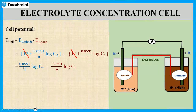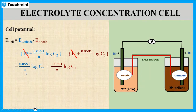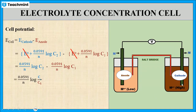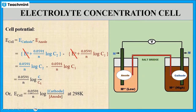The equation becomes: E cell = (0.0591 / N) × log C2 − (0.0591 / N) × log C1. Since 0.0591 / N is common, we take it outside: E cell = (0.0591 / N) × (log C2 − log C1). Since log X − log Y = log(X/Y), this becomes E cell = (0.0591 / N) × log(C2 / C1), or equivalently, E cell = (0.0591 / N) × log([cathode] / [anode]) at 298 K.